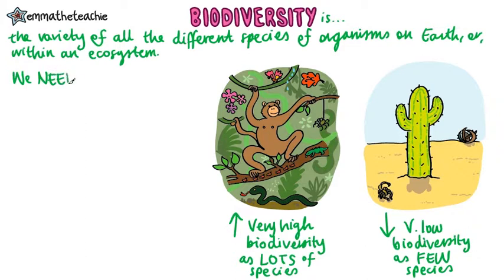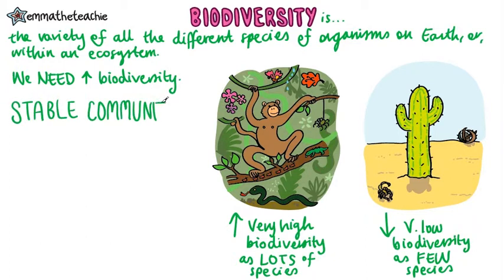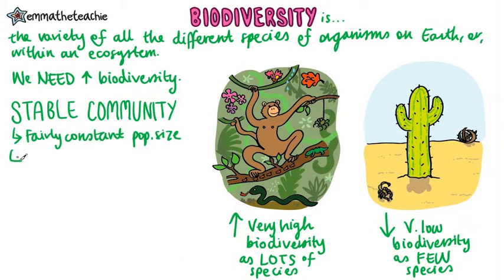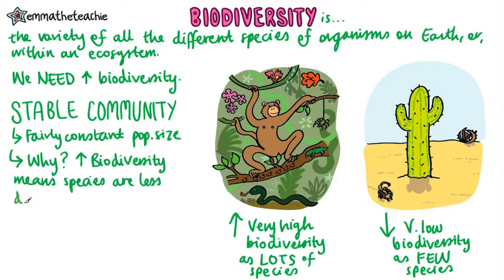The future of the human species on Earth relies on us maintaining a good level of biodiversity. Let's recall the definition for a stable community — this is one in which there's a fairly constant population size. Having a higher level of biodiversity means that species are less dependent on just one other single species for their survival, like for shelter or food.